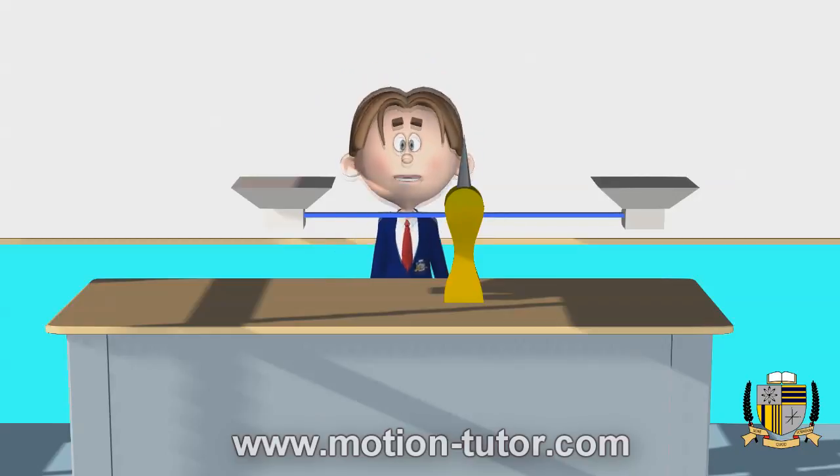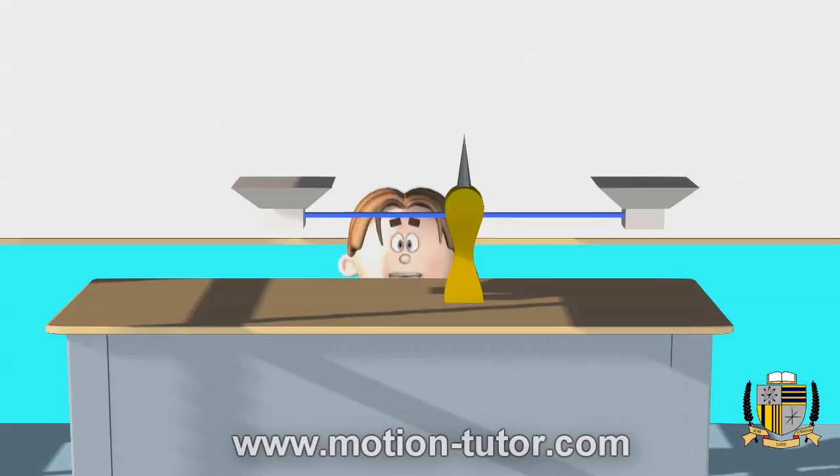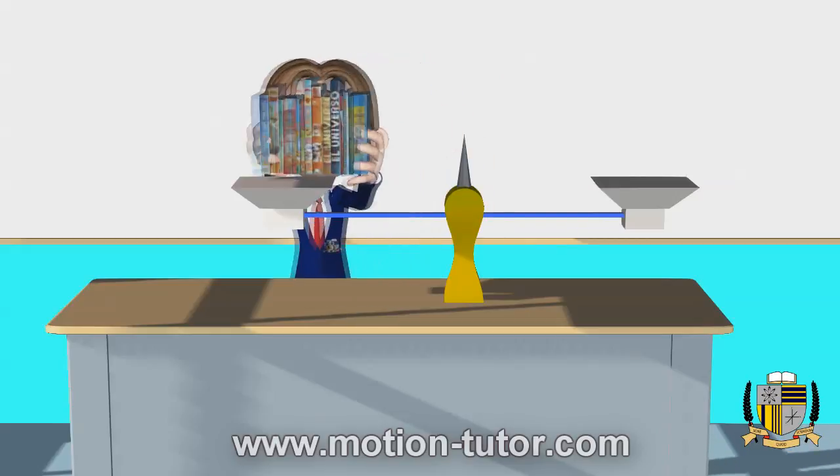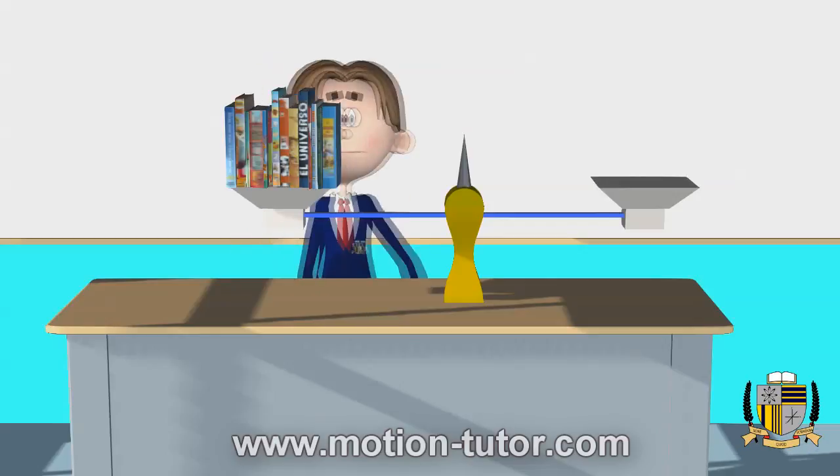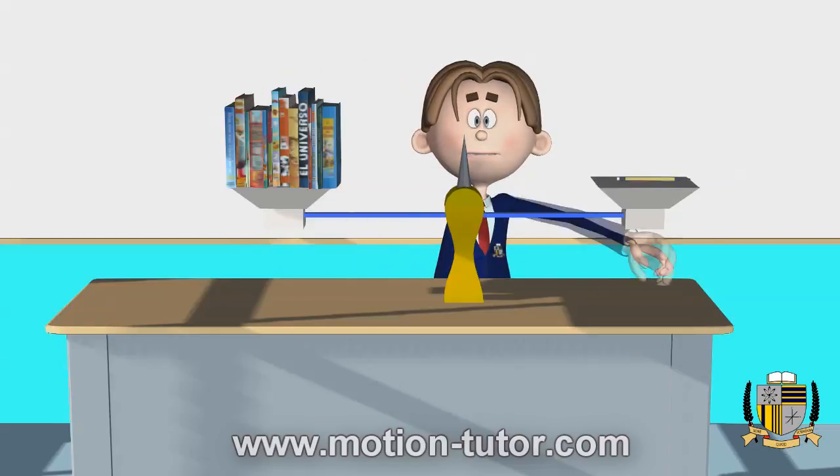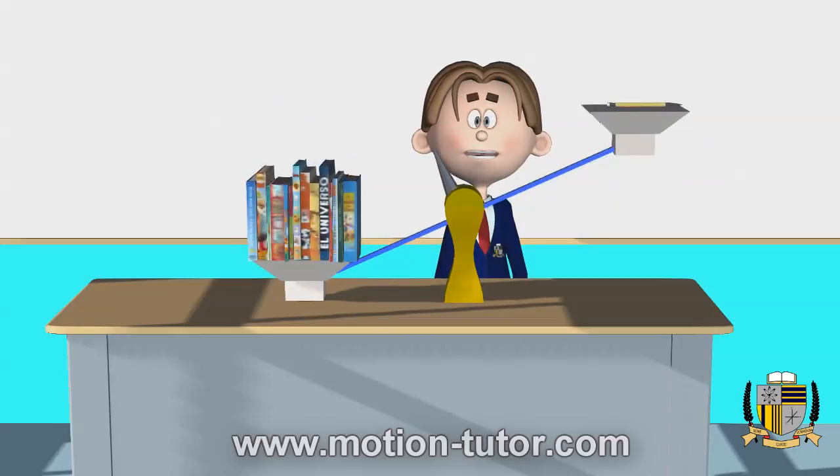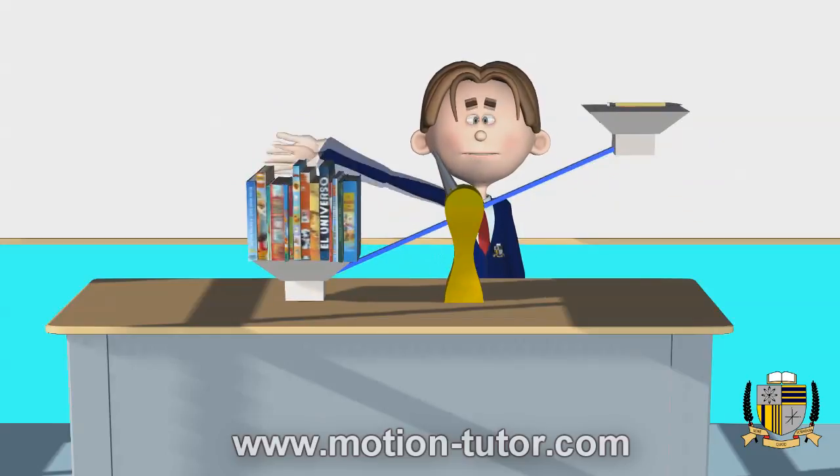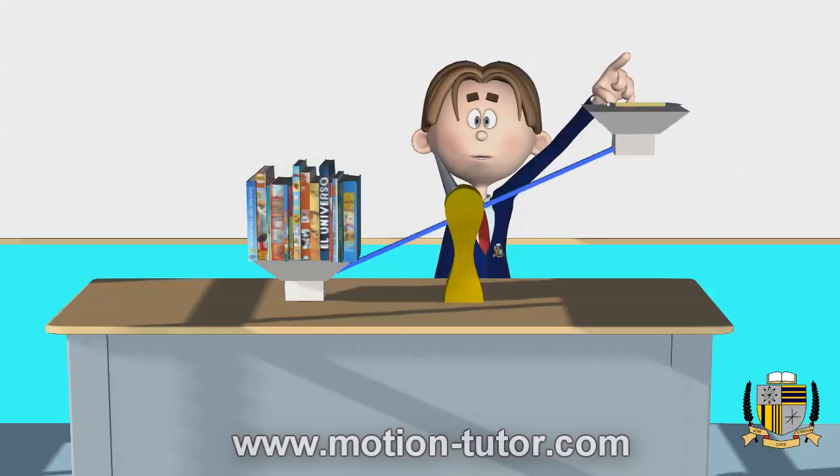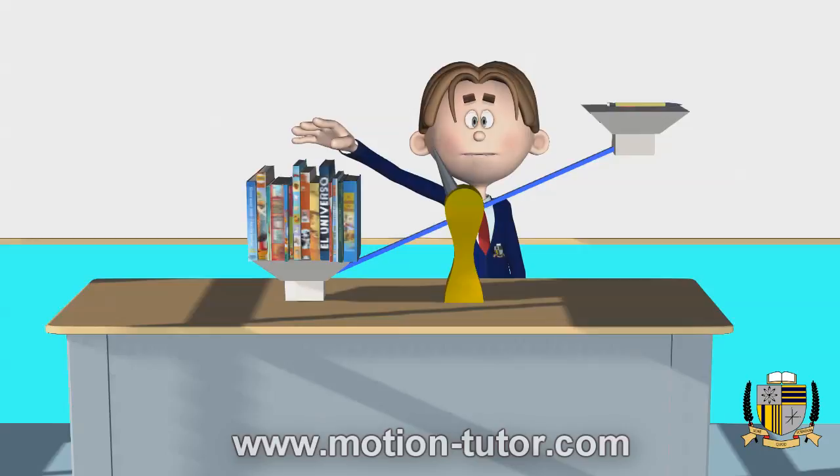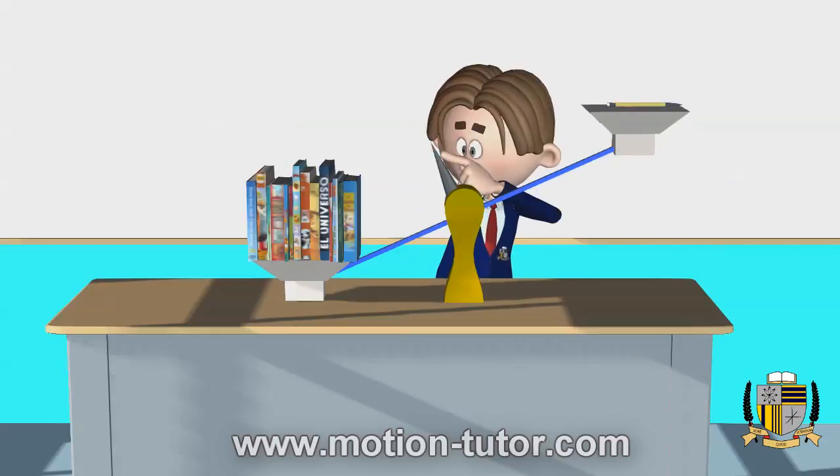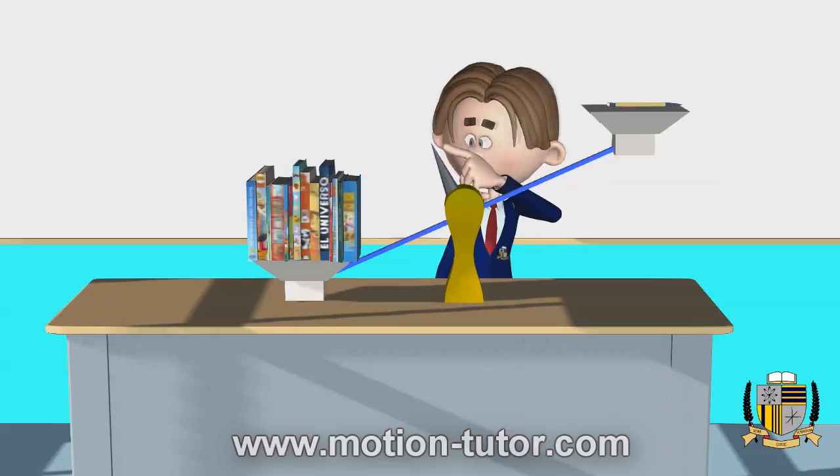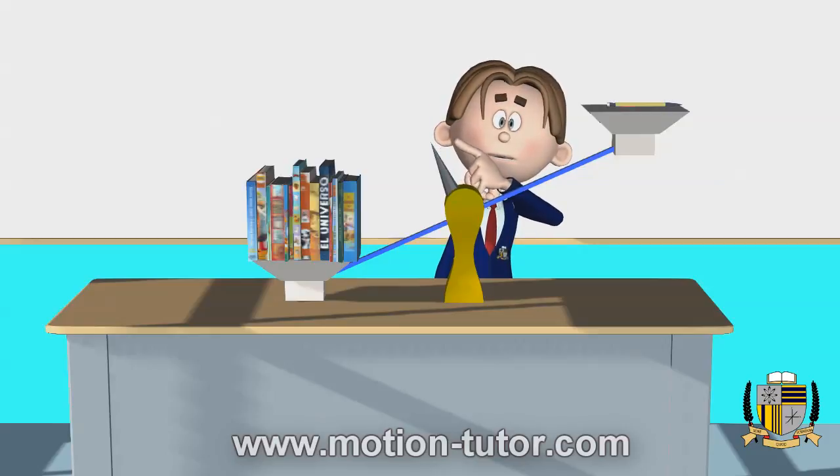So first objects I'll be using will be some books and a pencil. Now according to this scale, we see that the books are heavier than this one pencil because the books are lower on the scale, the pencil is higher up like a seesaw, and this needle is pointing over towards the heavier object, which are the books.